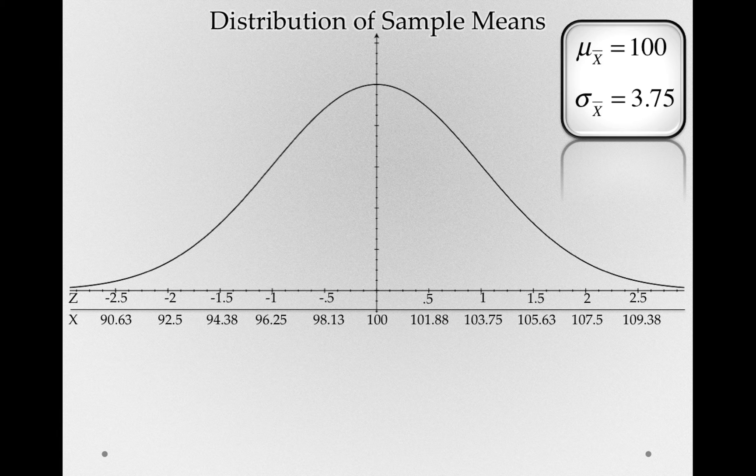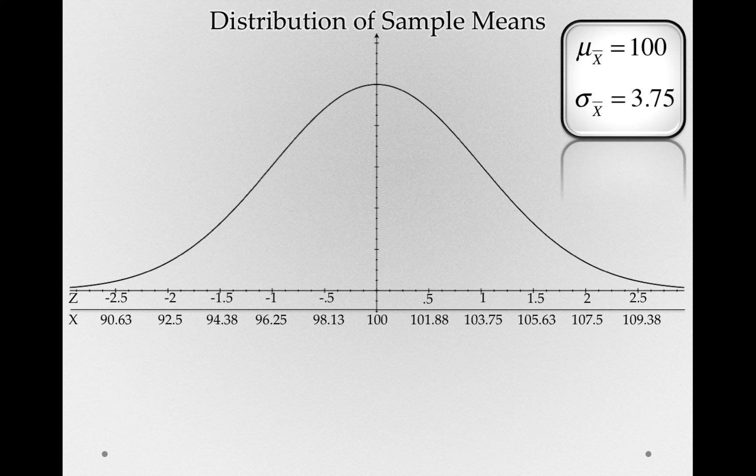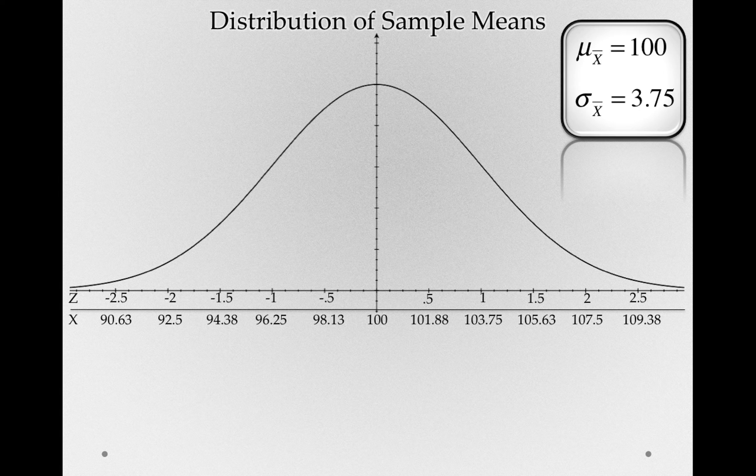Remember, the shape doesn't change, we're simply adding a new axis. And this gives us an idea of what types of sample means we would expect to get if the null hypothesis is true.